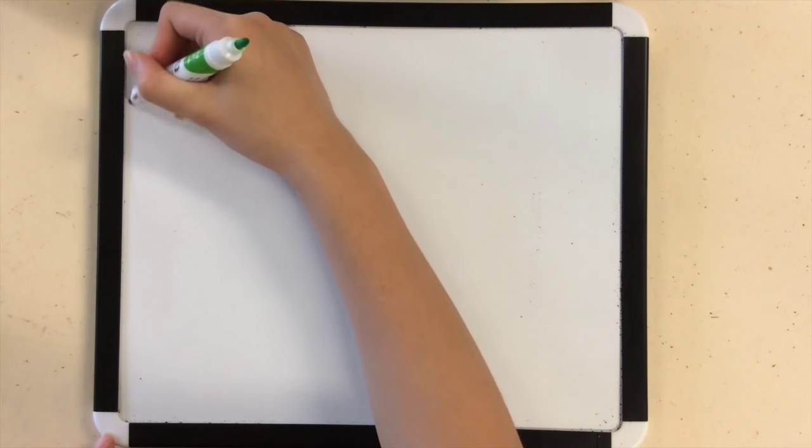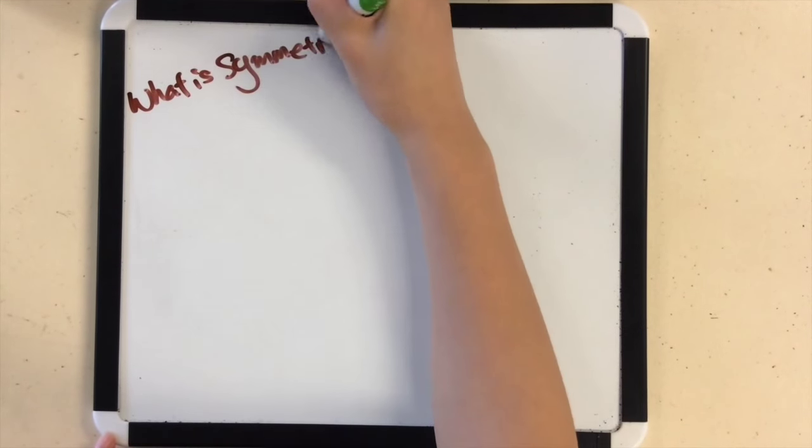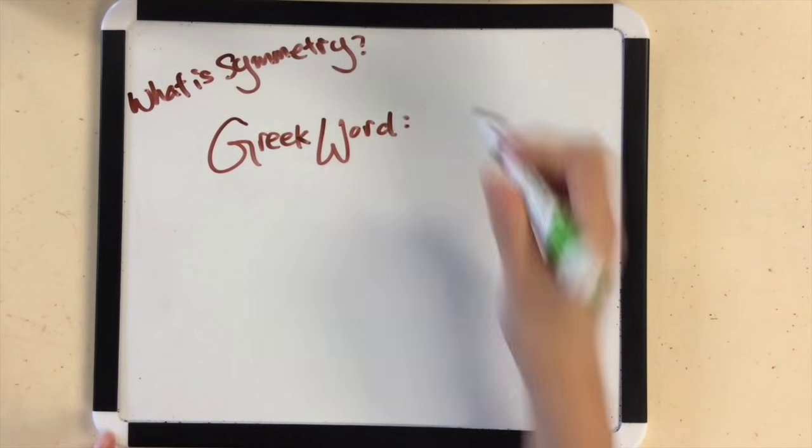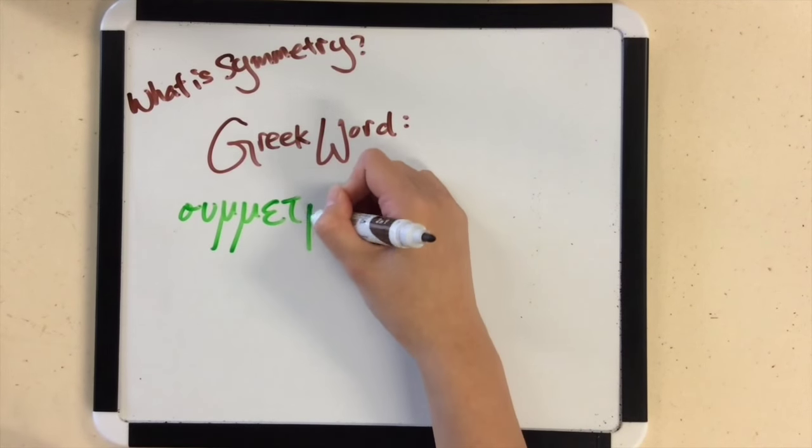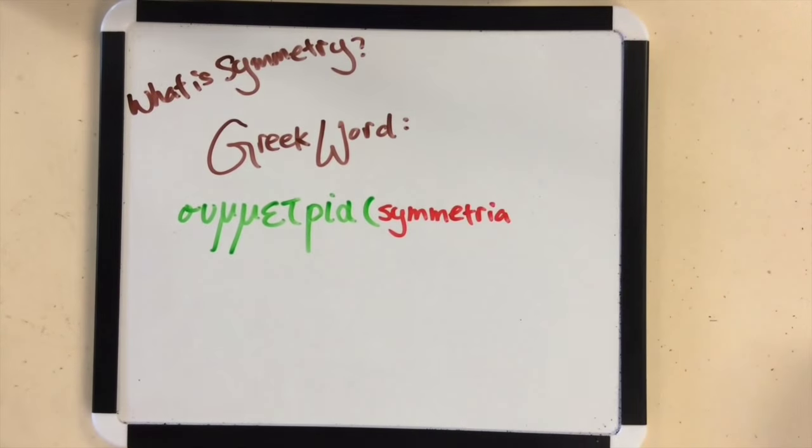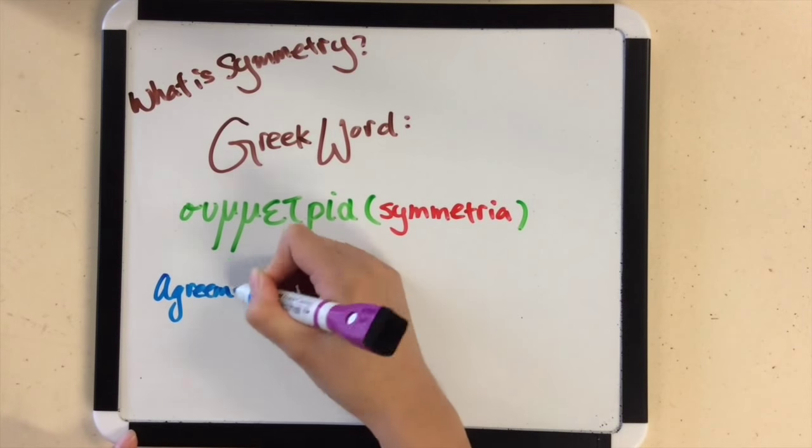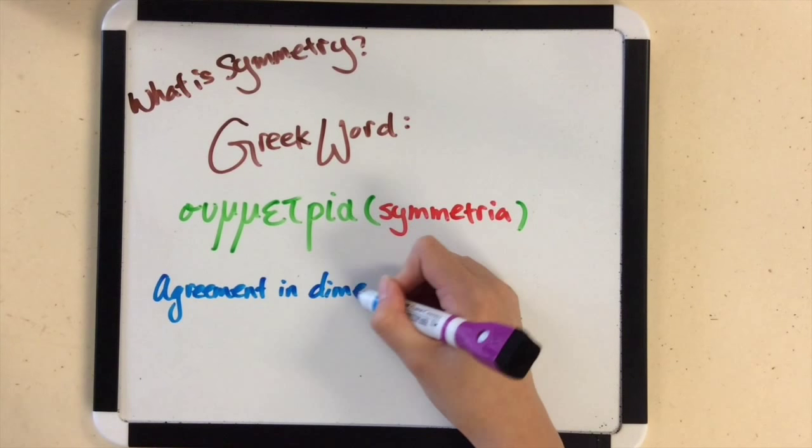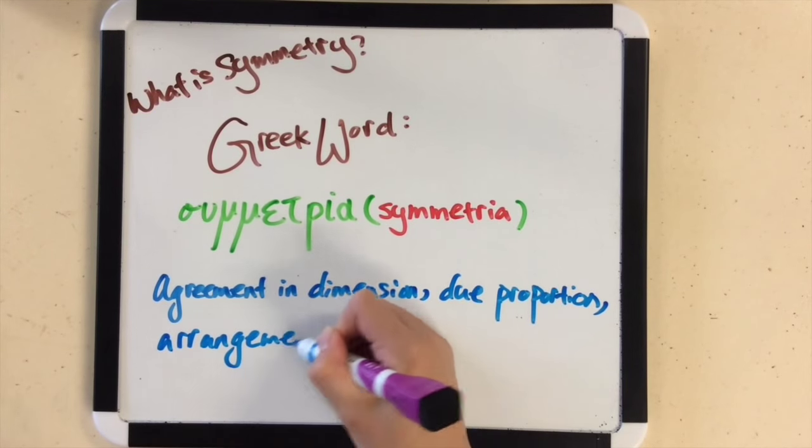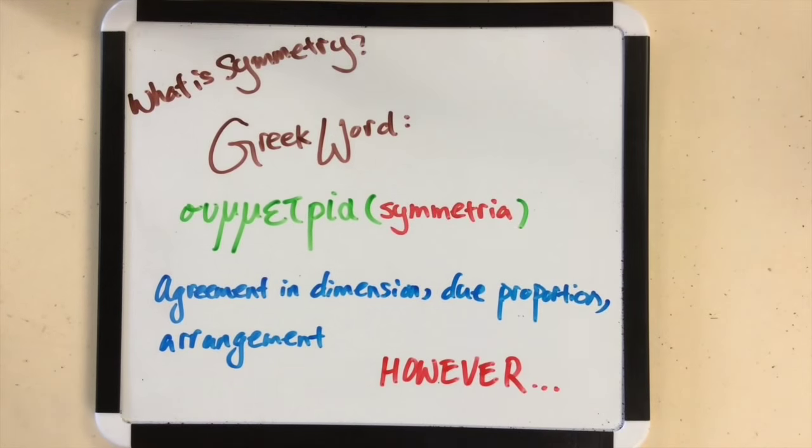Symmetry. It sounds so simple. But what is the definition of symmetry? Well, the word symmetry comes from the Greek word symmetria, meaning agreement in dimensions, due proportion, arrangement. However, in mathematics, symmetry has a more precise definition,